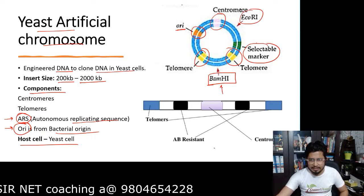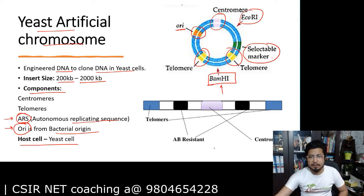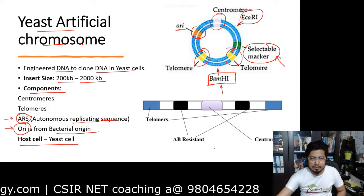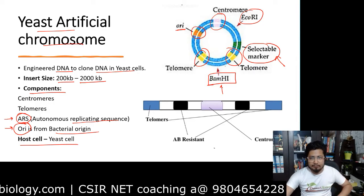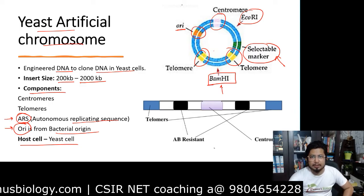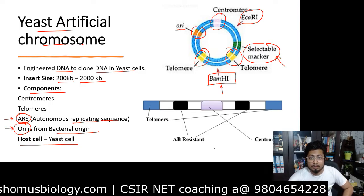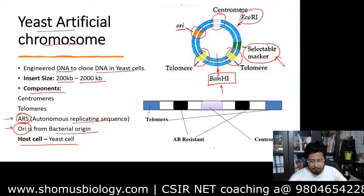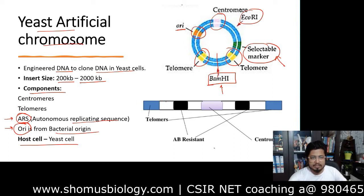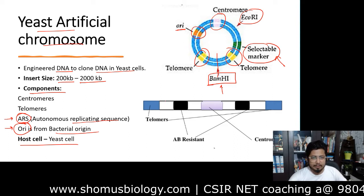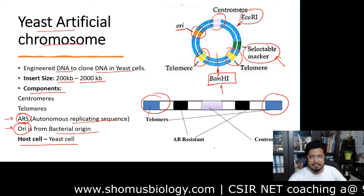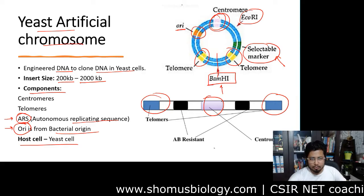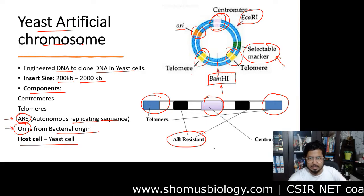We have this ECO R1 cleavage site and selectable markers. The selectable markers are used to screen the recombinant plasmid from the non-recombinant ones. If we treat this circular structure of this Yeast Artificial Chromosome with BAM H1, it will cleave it from center. As it cleaves it from center, it will be positioning telomeres in the two opposite poles, and the centromere will be present completely in the center. In between, we have these two different places known as AB resistant places.